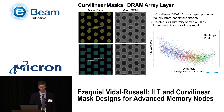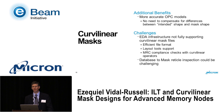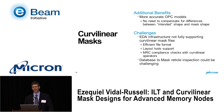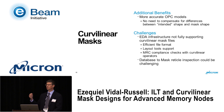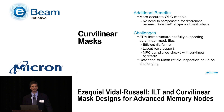An additional benefit is that when calibrating an OPC model, you sometimes have to compensate because the intended mask shape is not what you're actually getting on the mask — corners of features are rounded. By using curvilinear shapes, you eliminate the difference between mask intent and what you get on mask, which automatically results in a better OPC model.